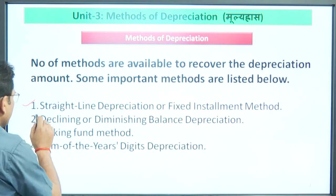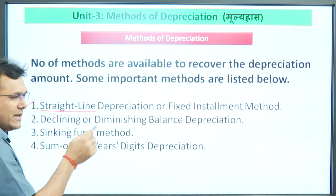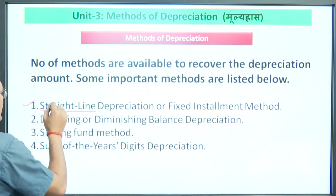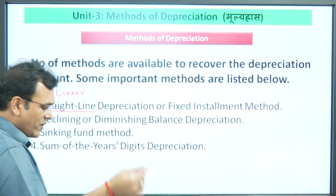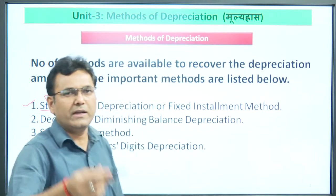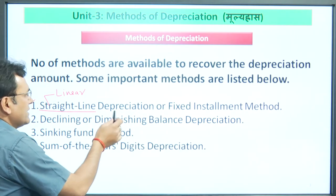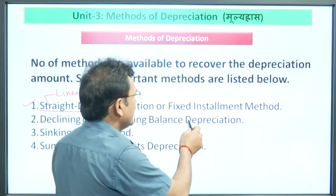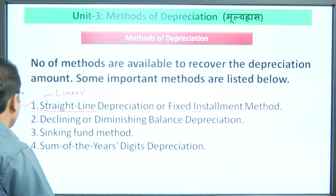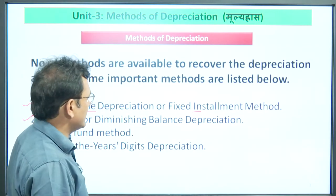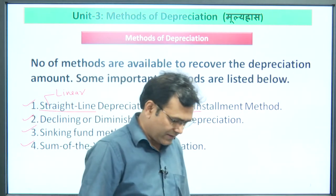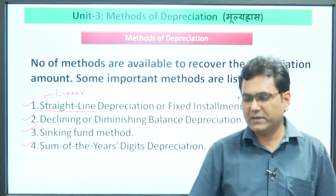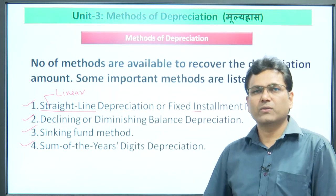The straight line method means values change linearly — so rate of depreciation is constant. The second method is the declining or diminishing balance depreciation method. The third is the sinking fund method. The fourth is the sum of the years' digits depreciation method. We will work through some of these methods and solve problems to understand how we calculate the required annual amount.